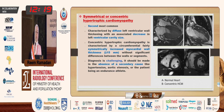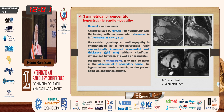The second type is symmetric or concentric HCM, the second most common type. There is diffuse left ventricular thickening associated with a decrease in ventricular cavity size. There is a rather symmetrical increased myocardial wall thickness greater than 15 millimeters measured during diastole, with no significant difference between the different segments of the LV. There is also associated RV hypertrophy in the free wall.